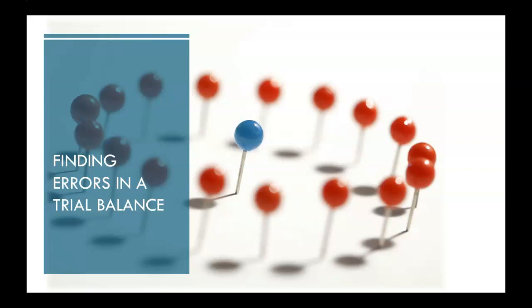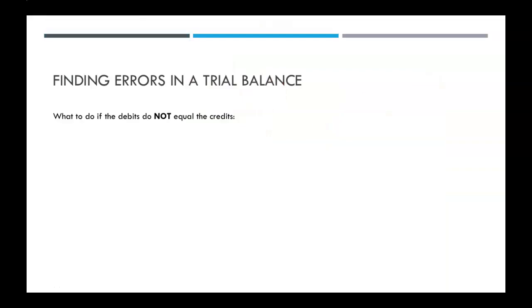Let's talk about the different ways that you can find errors in a trial balance. When you're preparing a trial balance, your debits and credits need to equal. But what happens if they don't? Well, the first step is just add up the columns again. It might have just been a math error and that can be an easy fix.